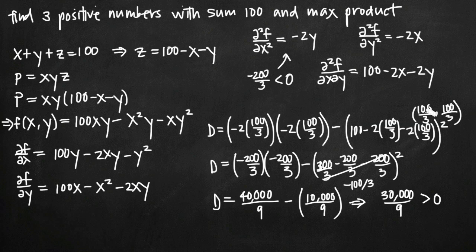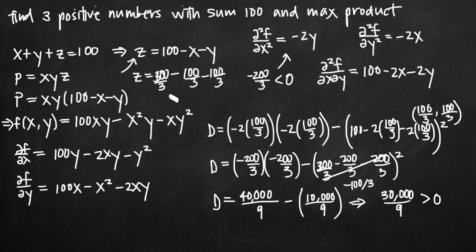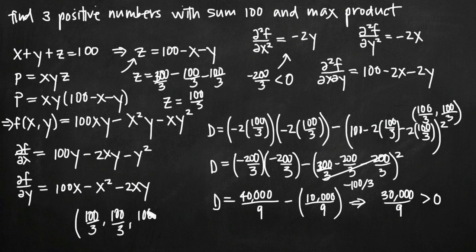All that's left is to find z. Plugging into z equals 100 minus x minus y: z equals 100 minus 100/3 minus 100/3 equals 300/3 minus 100/3 minus 100/3 equals 100/3. So our three positive numbers with a sum of 100 and maximum possible product are all equal to 100/3, 100/3, and 100/3.